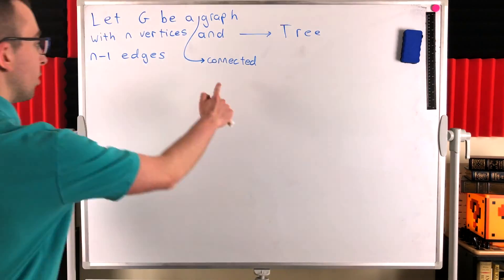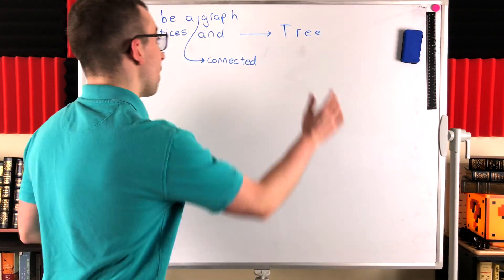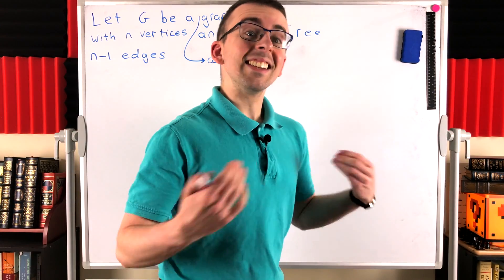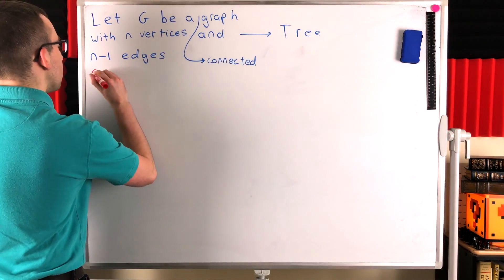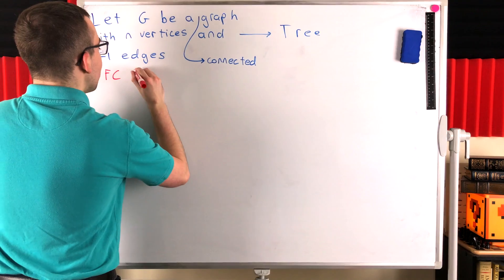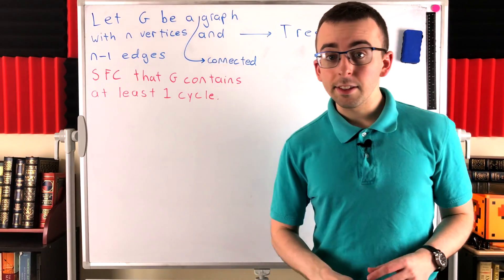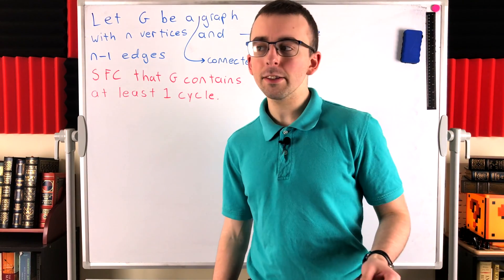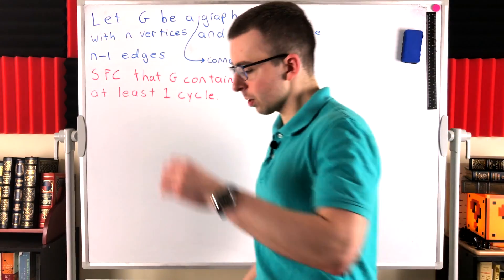Since our graph G is connected, if it also has no cycles, then it's a tree. So let's suppose for the sake of contradiction that it does have at least one cycle. Suppose for contradiction that G contains at least one cycle. This is our contradiction assumption, because if G does not contain any cycles, then it's an acyclic connected graph and thus we're done — the graph is a tree.